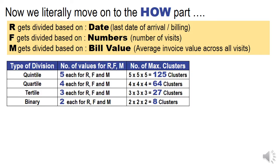Let us look at how many clusters can emerge using an RFM technique. There are four possibilities: quintile, quartile, tertile, and binary. In quintile there are five possibilities each for R, F, and M. In quartile four each, in tertile three each, and in binary two each — giving a maximum number of clusters of 5 cubed = 125, 4 cubed = 64, 3 cubed = 27, and 2 cubed = 8.